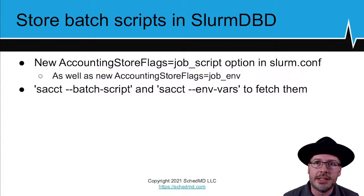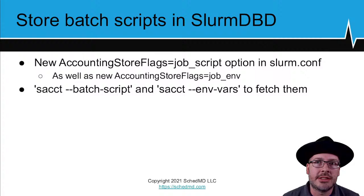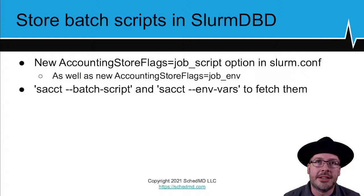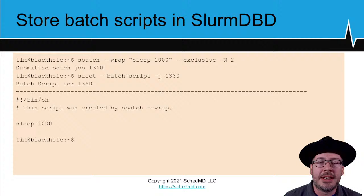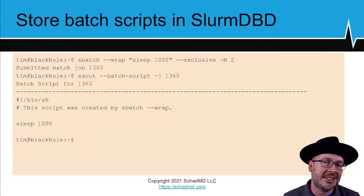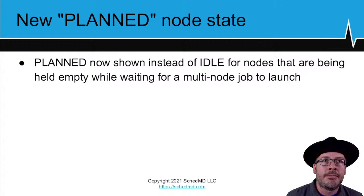Another new feature: storing batch scripts in the Slurm database. This is an optional feature starting in 2108 — historically we were adverse to this to avoid filling the database. There's a new accounting store flags option of 'job script' to store job scripts, and 'job env' to store job environment files verbatim. The sacct batch-script and sacct-nvars options can fetch them back from the accounting subsystem. If you use the wrap command, a comment is added to those job scripts noting that sbatch dash-dash-wrap was used.